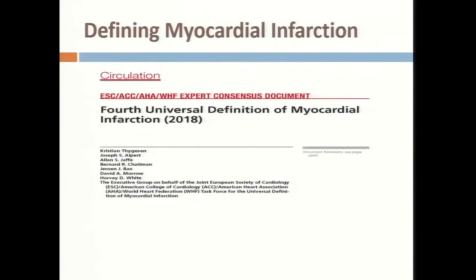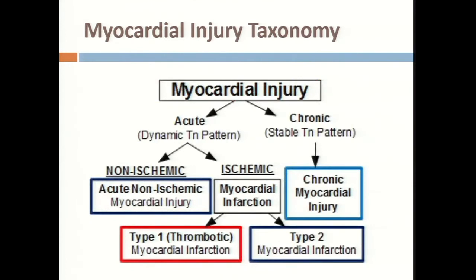How is myocardial injury defined now? This is the fourth universal definition of MI — a comprehensive and extremely important document that lays out the taxonomy and definitions of different disease states. As Willis Hurst famously said, unless you define a disease, you can't talk about it or learn about it. The taxonomy starts with myocardial injury, defined by an elevated troponin — more than the 99th percentile of a healthy population.